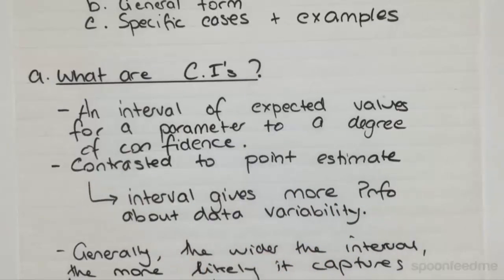So it's an interval of expected values. It is trying to say we expect the value to lie within a and b.